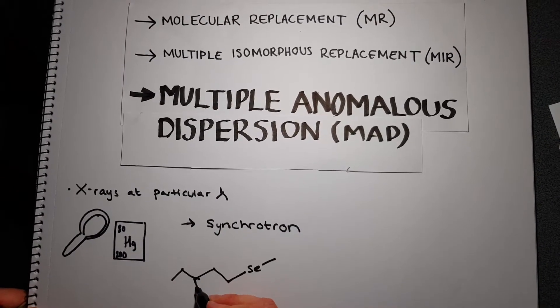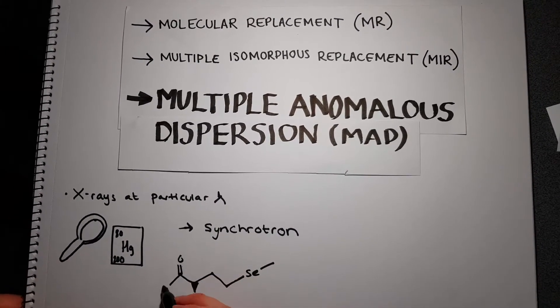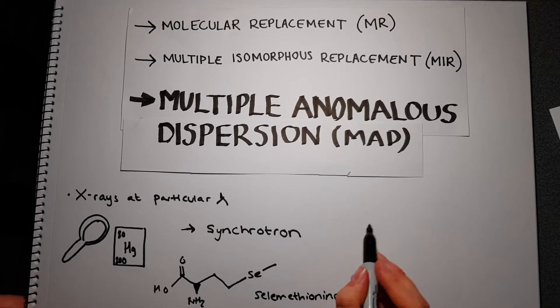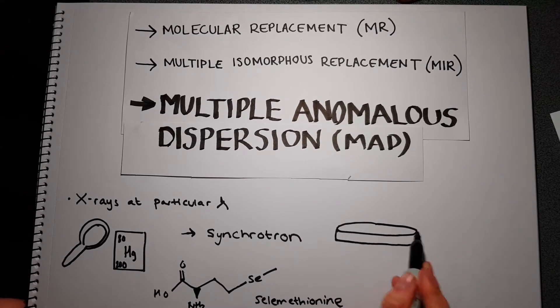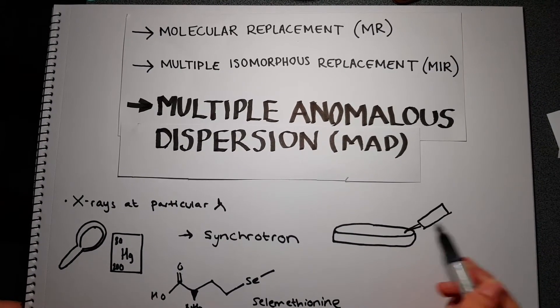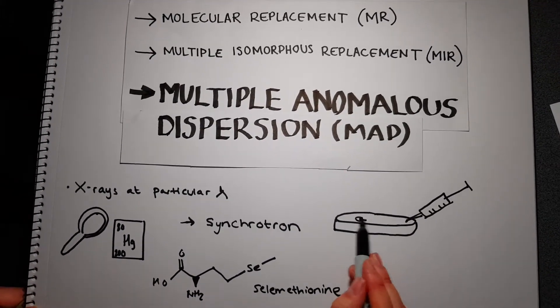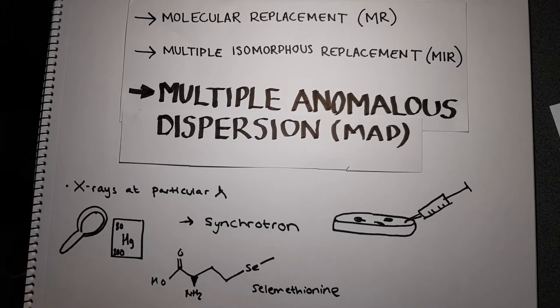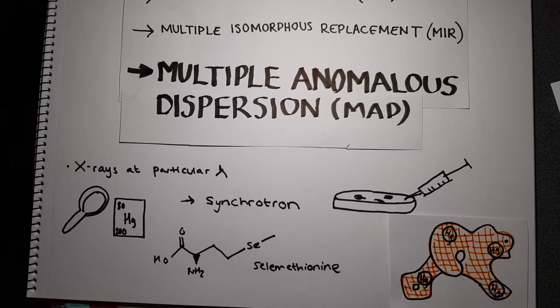Selenomethionine—the amino acid with selenium instead of sulfur—is incorporated into the protein when it is expressed in E. coli. Selenomethionine is recommended because the identity and number of sites are known from the amino acid sequence, which improves the quality of the electron density map.